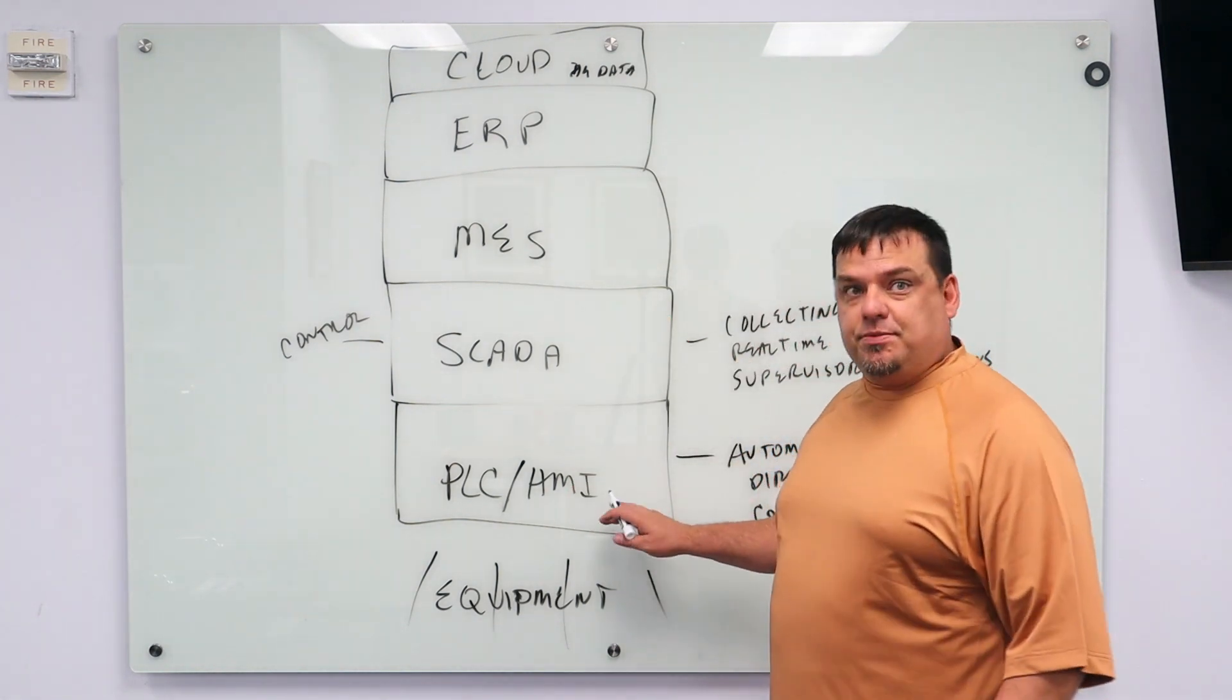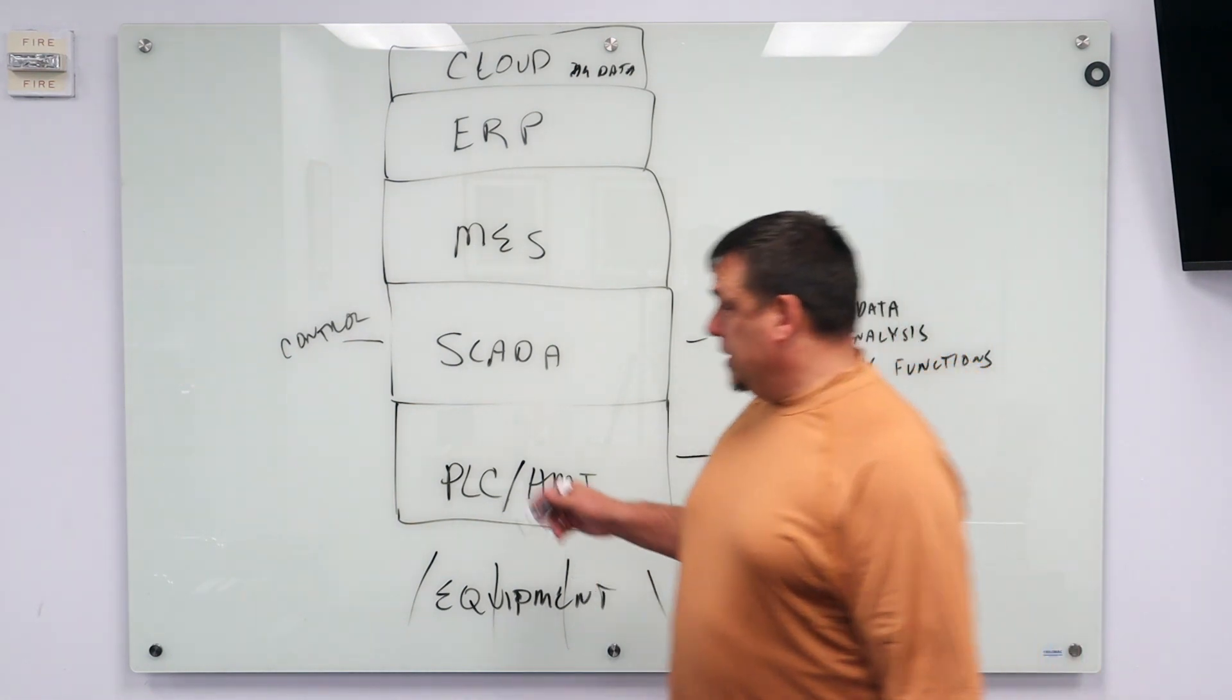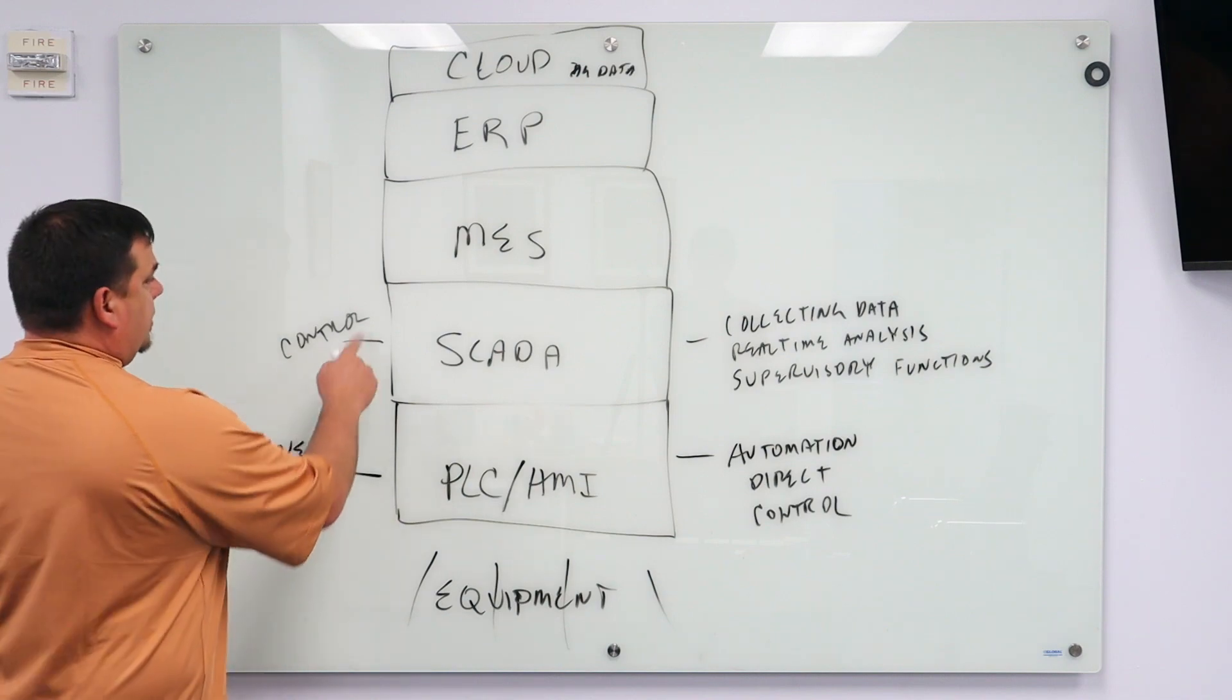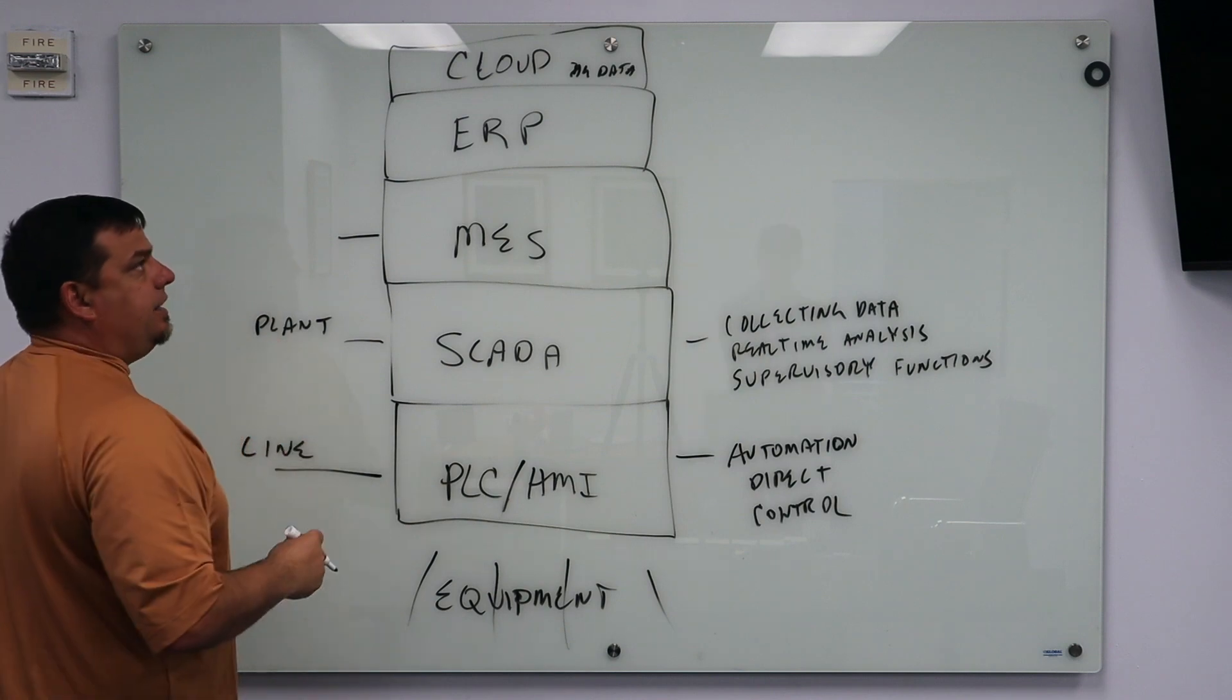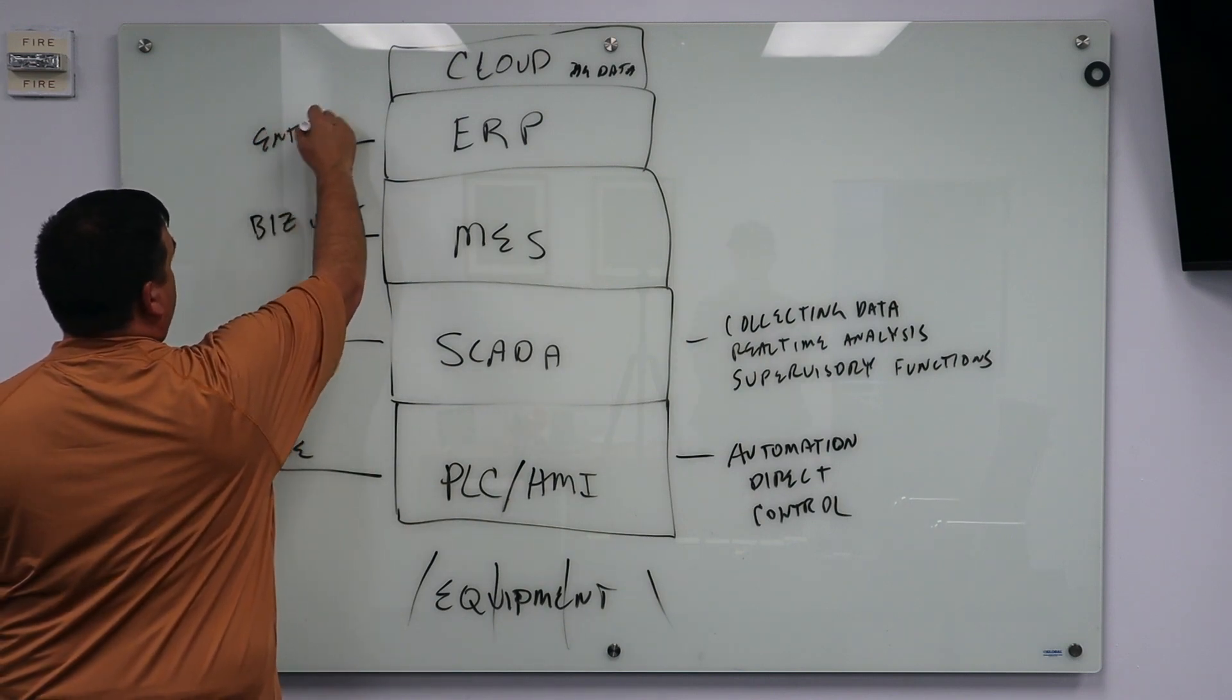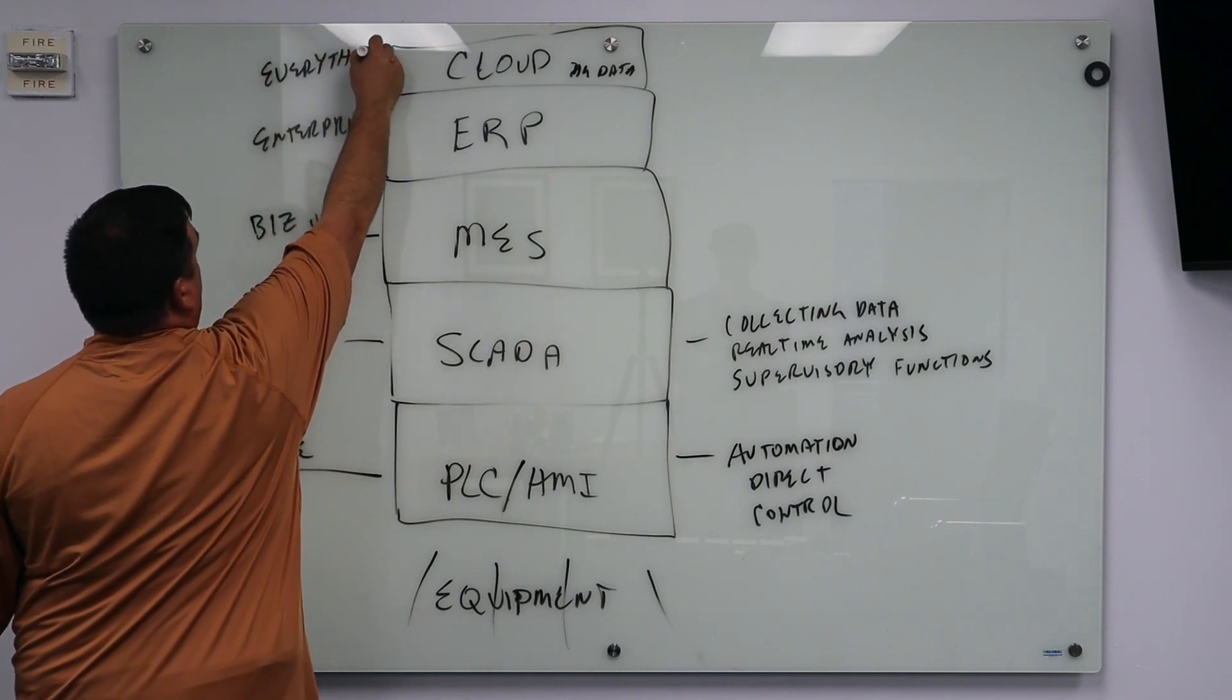PLC, HMI is almost always reduced to the line. When we look at the total structure here, it's normally line, production line. SCADA is plant. This MES is, think of it as business unit. ERP is the enterprise, the company itself. And cloud is everything. This would be like all of our holdings.